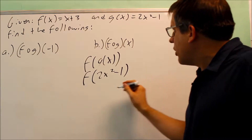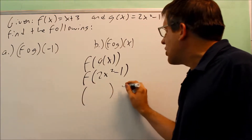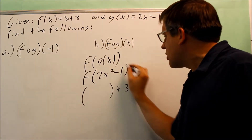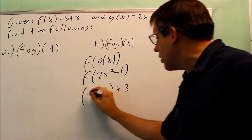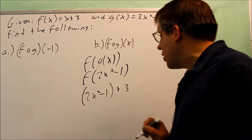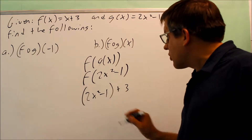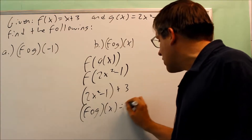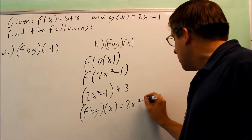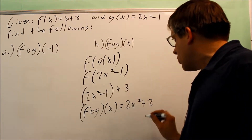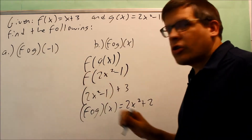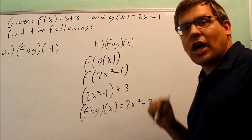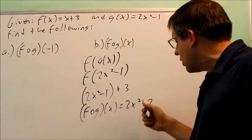So this is saying put 2x squared minus 1 into this formula in place of the x. I'm going to start with the template: I have something and then plus 3 — normally I have an x there. It gets replaced with 2x squared minus 1. And then I'm just going to simplify it. So my final answer for f of g of x is going to be 2x squared plus 2.